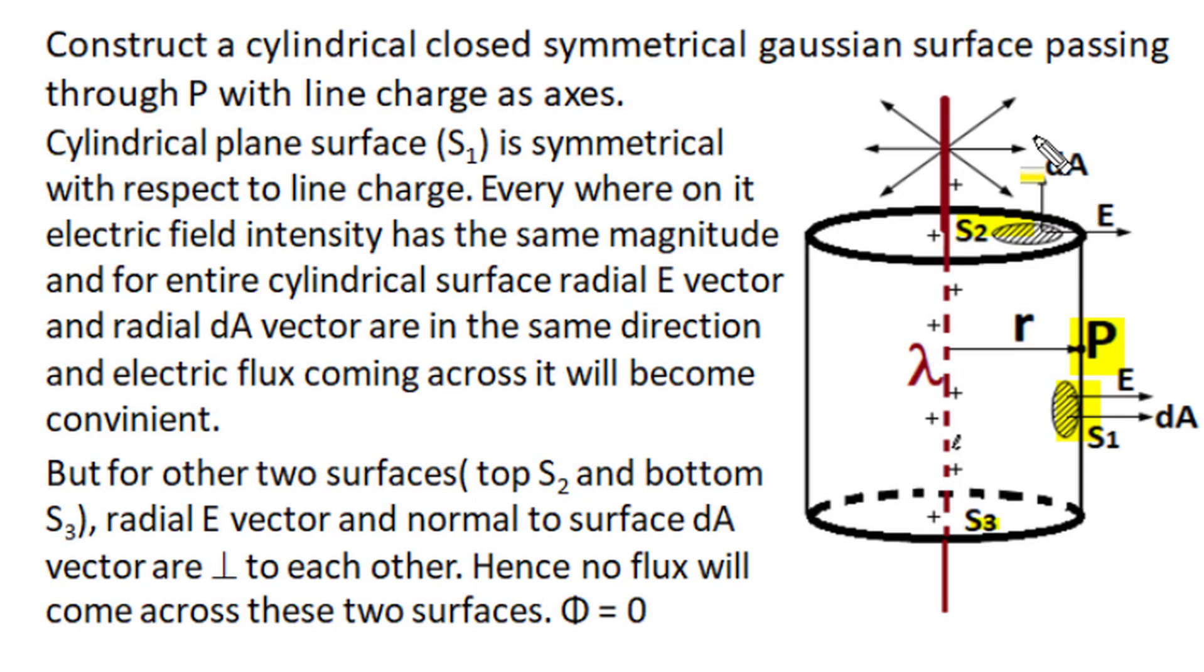Now everywhere electric field is radial outward for this positive line charge. And if we consider area vector normal to the surface, dA and E vector on this surface both get aligned and it will contribute flux across cylindrical surface. And due to symmetry,